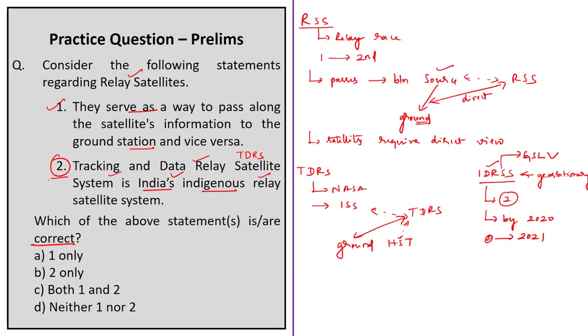So for this question, if you look at the second statement, it says TDRS is India's indigenous relay satellite system — this is incorrect as TDRS belongs to NASA. Therefore, option A — one only — is the correct option.